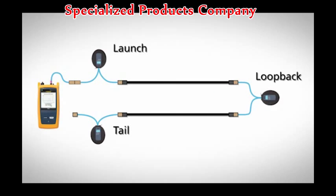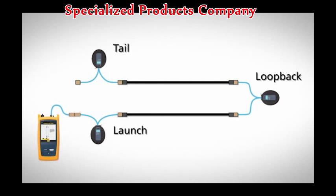Now, instead of testing one fiber in one direction, your test signal travels the length of the first fiber, then loops back to travel the length of the second fiber. If you want to perform a bi-directional test after the first direction has been tested, simply swap your launch and your tail and run the test in reverse.